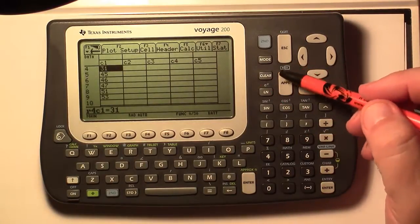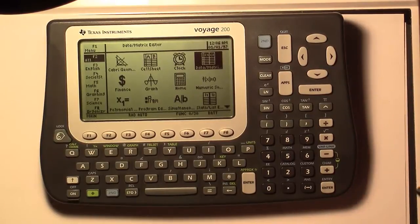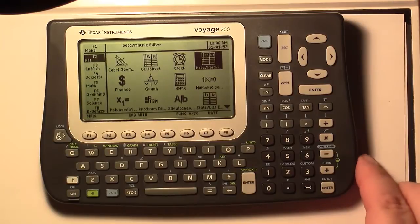Now to get out of this, you can simply just press your apps and then it'll take you back to your main screen. And that's how you find a mean on a TI Voyage 200. Thank you.